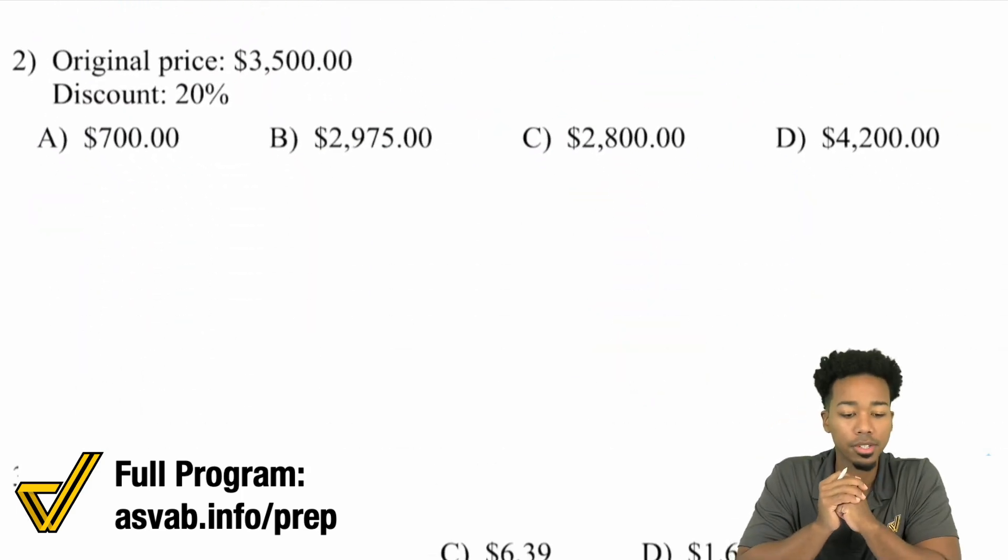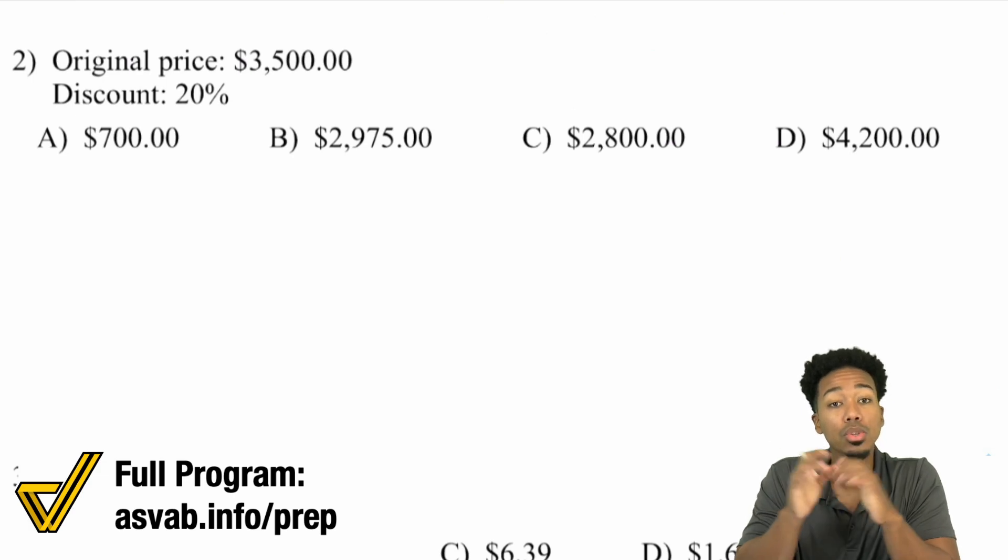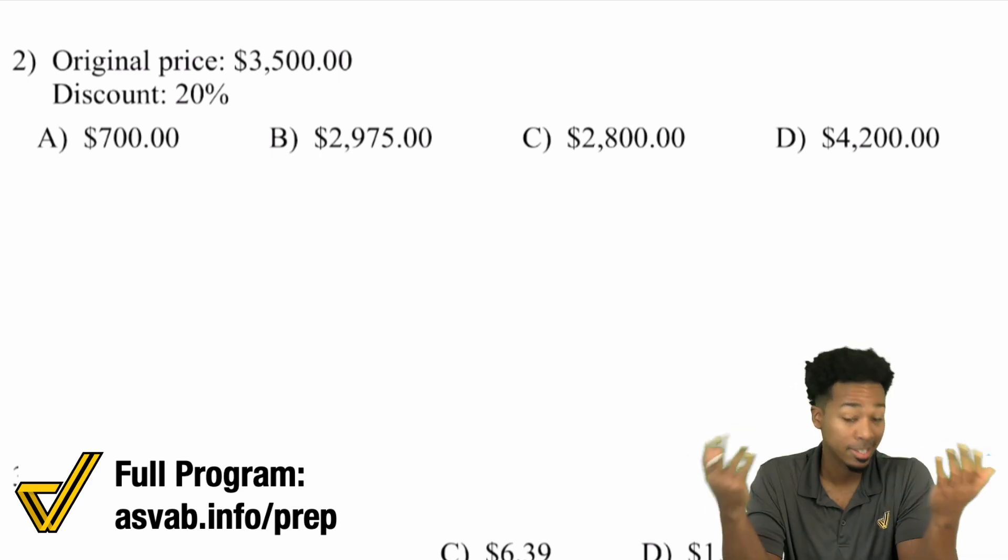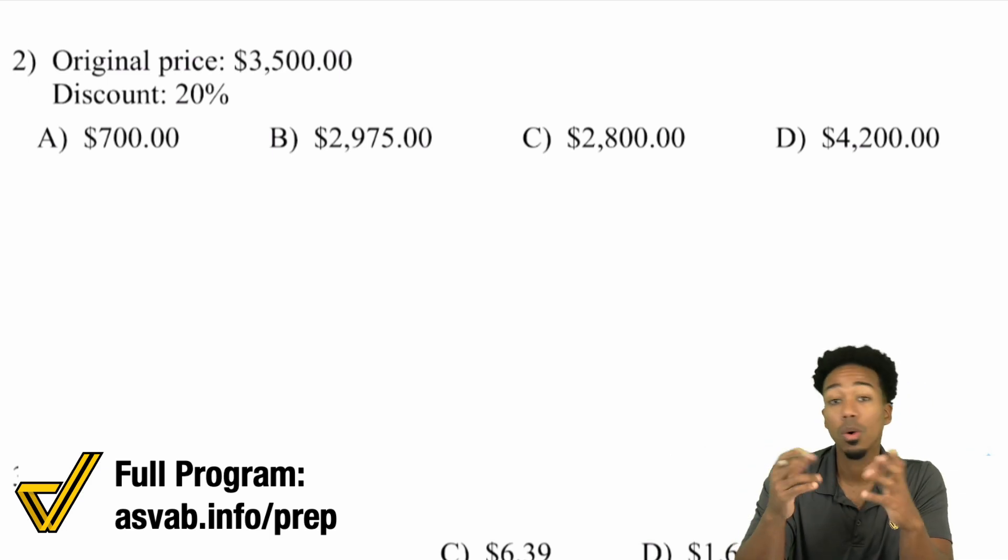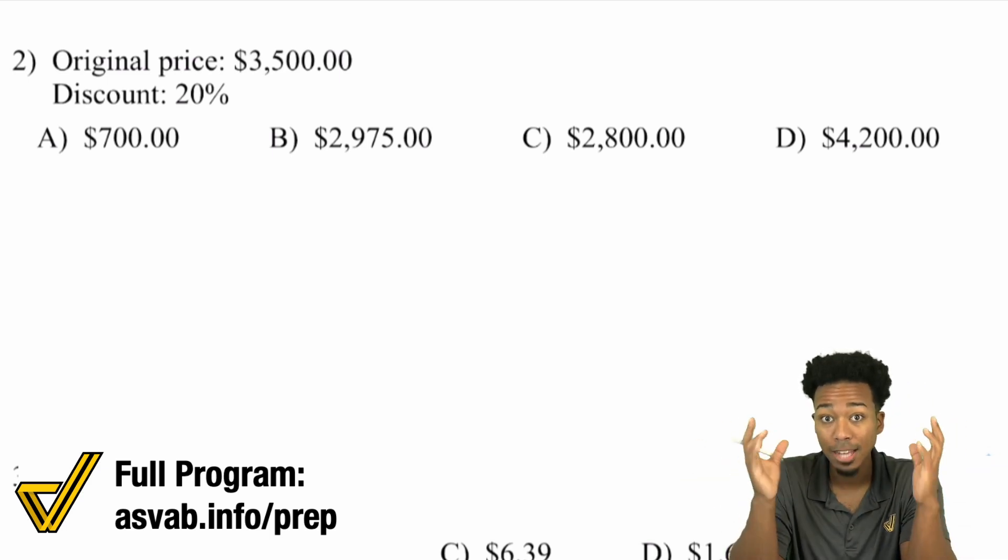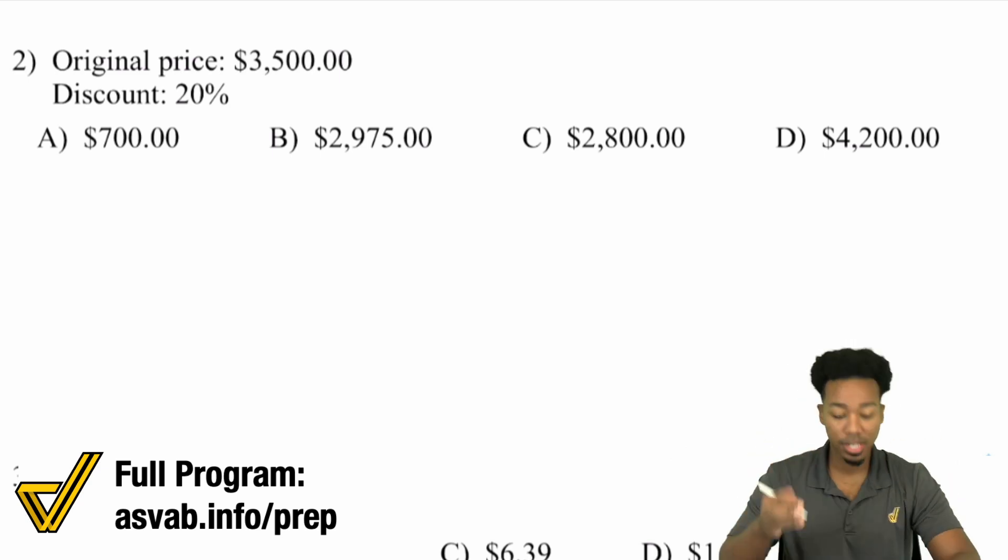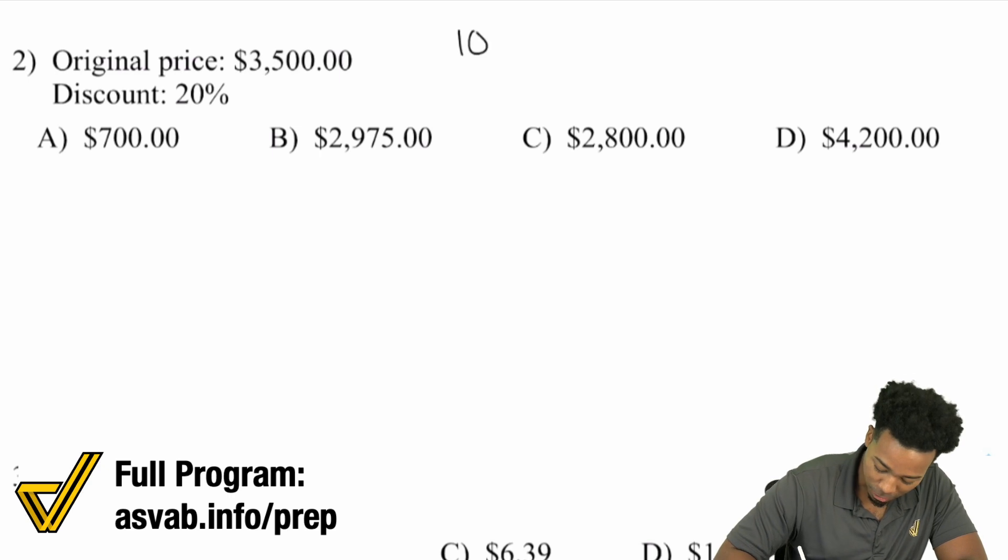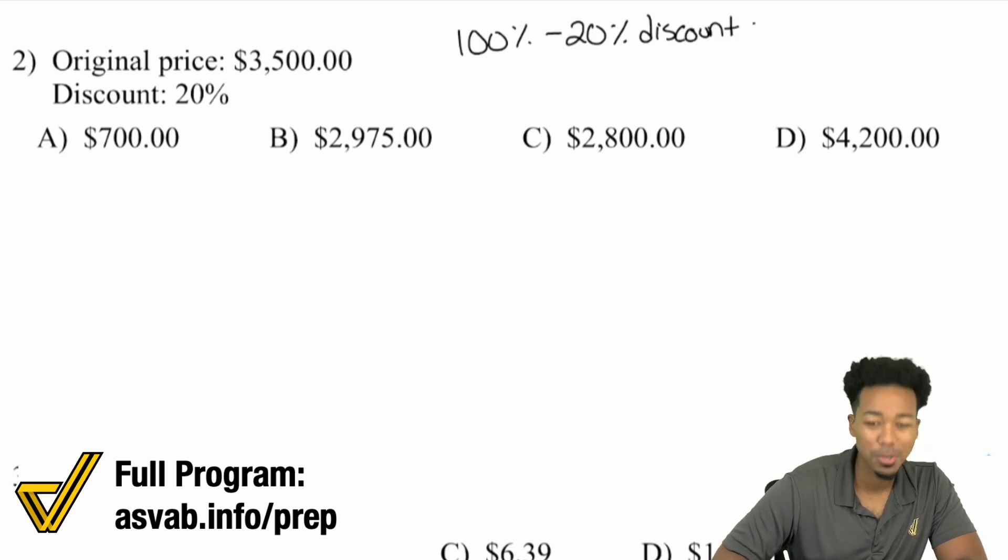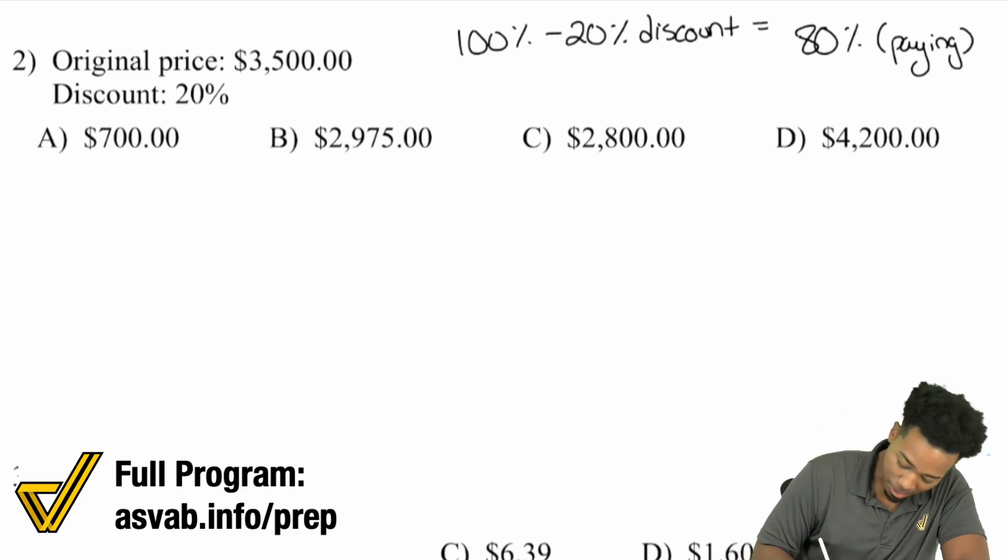The original price is $3,500 and the discount is 20%. There are two main ways: find 20% of $3,500 and subtract it, or find the ending percent you're paying. If it's a 20% discount, 100% minus 20% means you're paying 80% of the original cost. The problem is 80% of $3,500.